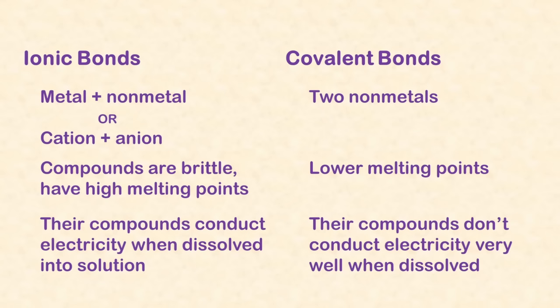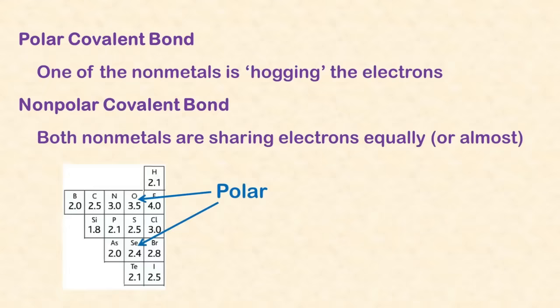Unit 2 covers chemical compounds. Metals and nonmetals are held together by ionic bonds, which are electrostatic forces, positives and negatives attracting each other. Nonmetals are held together by covalent bonds, where atoms share electrons. Covalent bonds can be polar, where they share electrons unequally, or they can be nonpolar, where they're sharing electrons fairly equally.